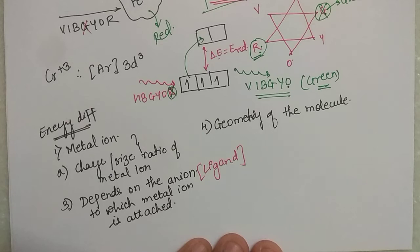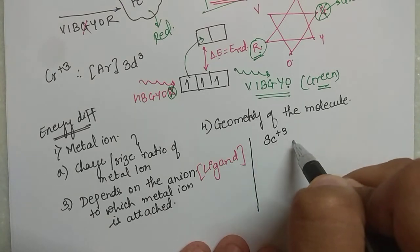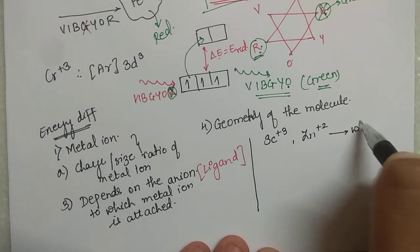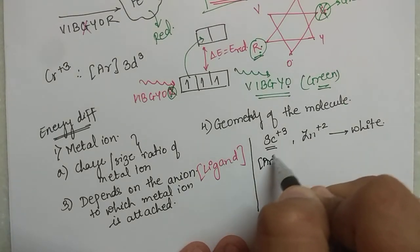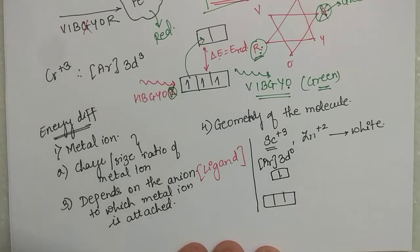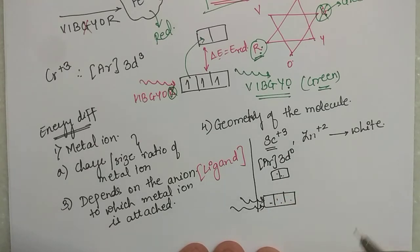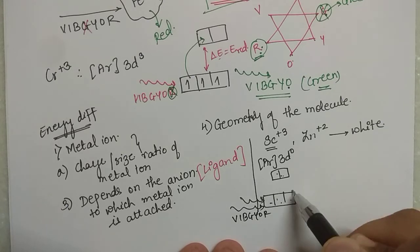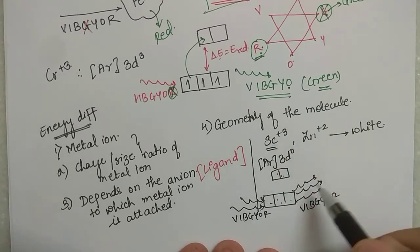On this basis we can explain why Sc³⁺ and Zn²⁺ are white. The configuration of Sc³⁺ is [Ar] 3d⁰. When I say 3d⁰, there is no electron in the d-orbitals, so a d-d transition is not possible — there is no electron to absorb light and jump. So no color gets absorbed, and that is why Sc³⁺ is white.